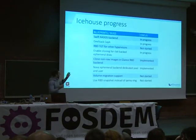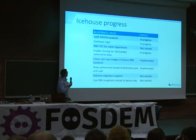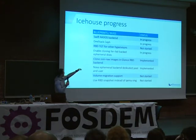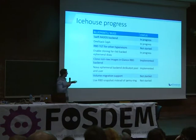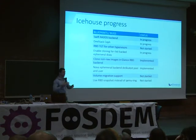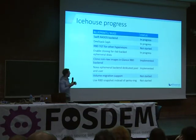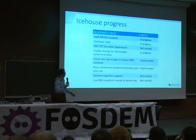This is where we are now — a mid-course progress table. The Swift RADOS backend is already in process. DevStack Ceph is also in process — if we want more developers involved in OpenStack and Ceph, the first step is to build a DevStack environment showing how it's configured with both Ceph and OpenStack. This is one step forward for new developers. RBD TGT for other hypervisors is also being worked on.